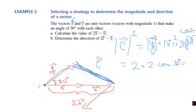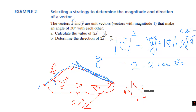So |C|² equals 5 minus 4 times square root of 3 over 2 — that is 5 minus 2 root 3. Take the square root to get |C|. Remember to check carefully: it should be minus in the cosine law formula for this setup, and don't forget to take the square root at the end.